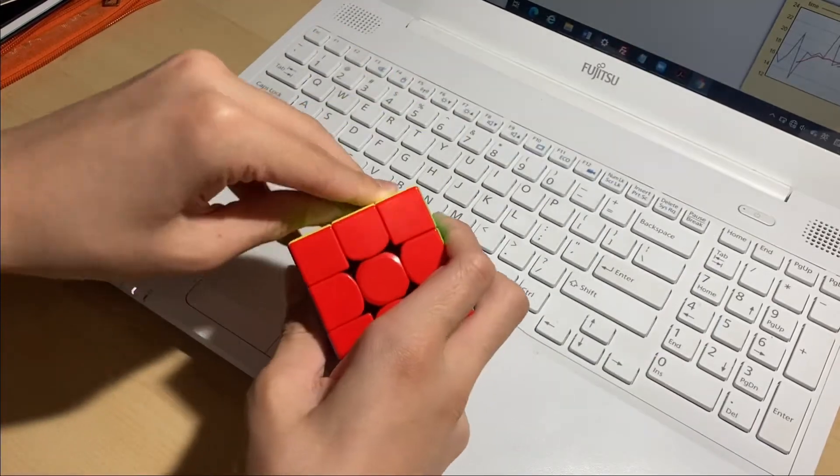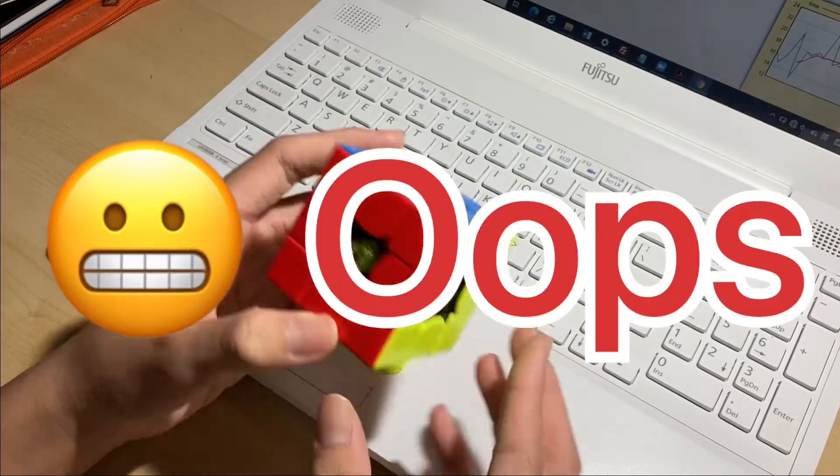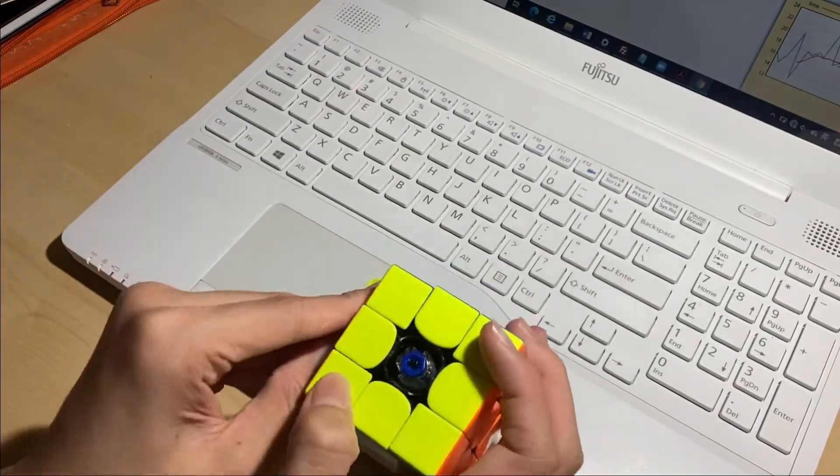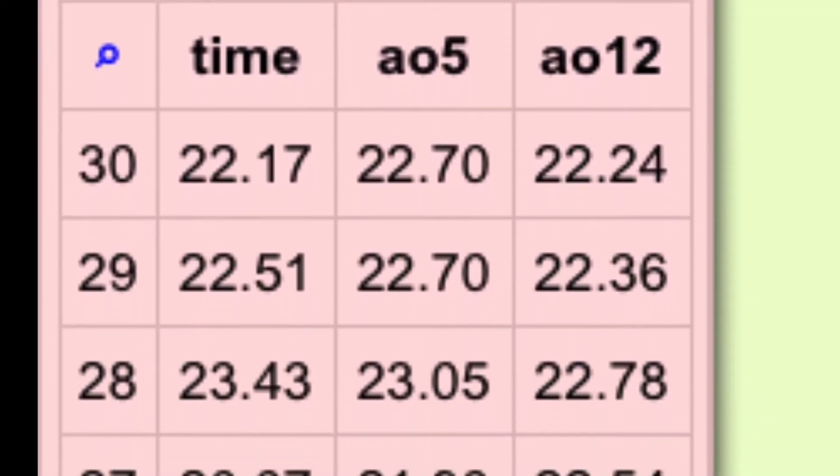Let's change it. Okay. Wrong cube. Okay, I've completed 30 solves with my phone, and the average was 21.86, and I did have some bad solves.